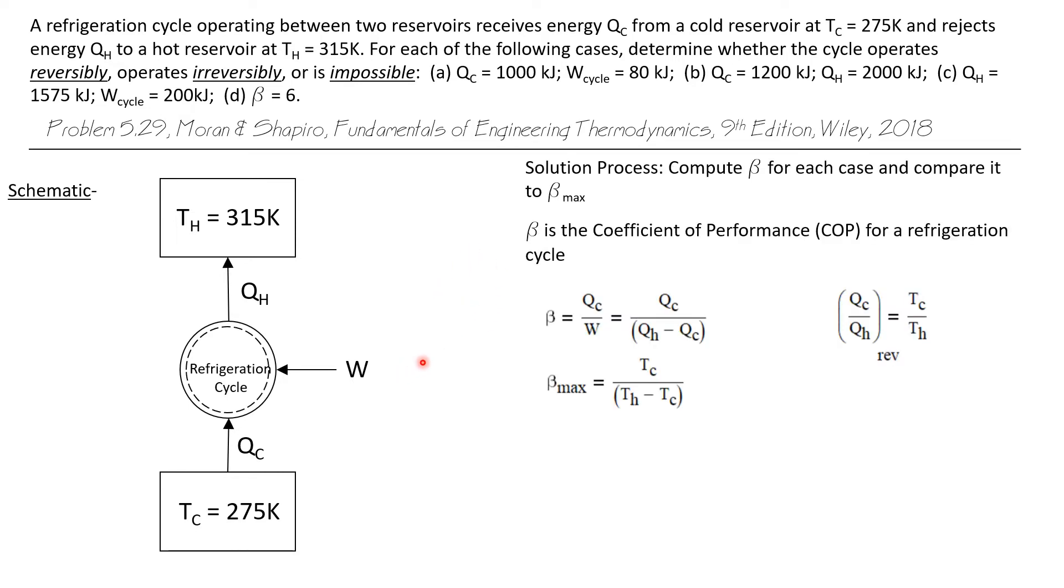We'll evaluate these by comparing the performance of the cycles presented with that of a reversible cycle, or the theoretical maximum performance of a cycle operating between these reservoirs. We don't have efficiency with refrigeration cycles like we have with power cycles. We have instead COP, or coefficient of performance. Whereas the efficiency of a power cycle was always less than one,